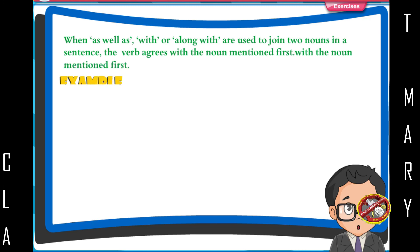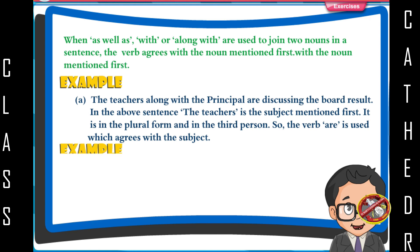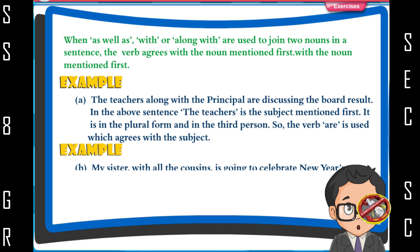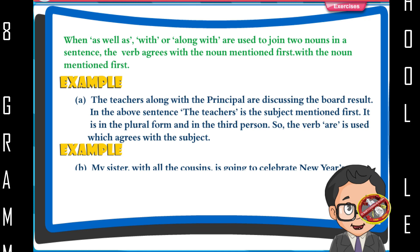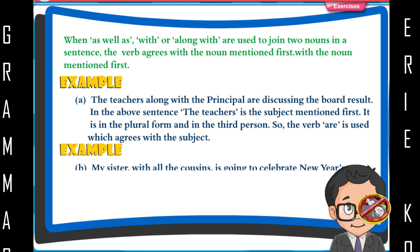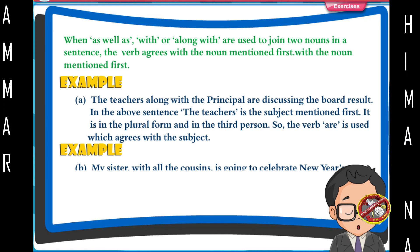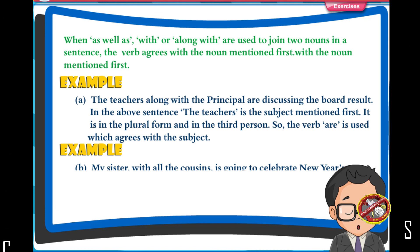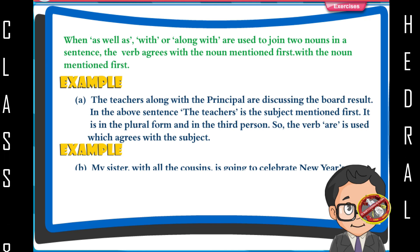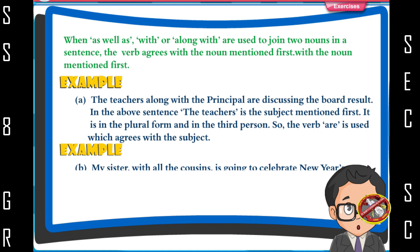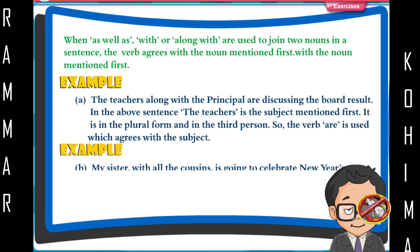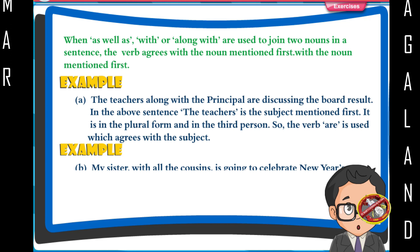When 'as well as', 'with', or 'along with' are used to join two nouns in a sentence, the verb agrees with the noun mentioned first. Example: The teachers, along with the principal, are discussing the board result. In the above sentence, 'the teachers' is the subject mentioned first — it is in the plural form and third person, so the verb 'are' is used, which agrees with the subject. Example: My sister, with all the cousins, is going to celebrate New Year's Eve at the club. Here, 'my sister' is the first subject — it is singular and in the third person, so the verb agrees with the subject 'my sister'.